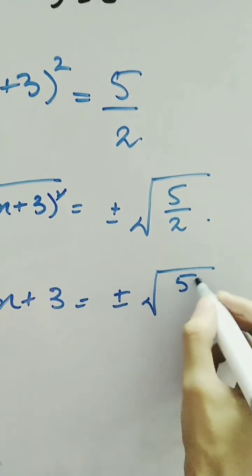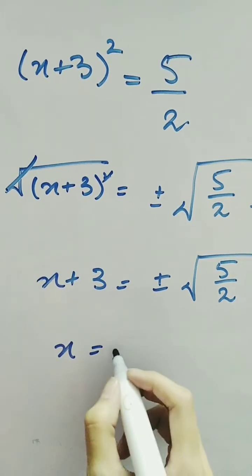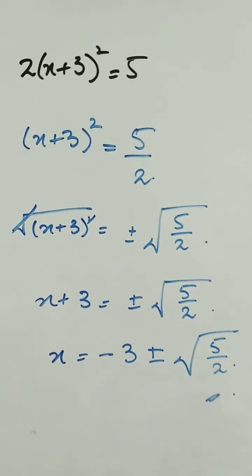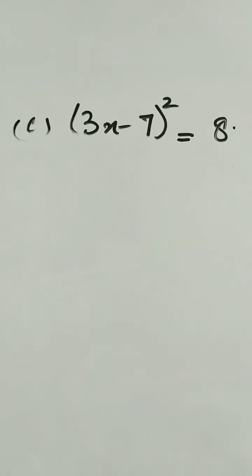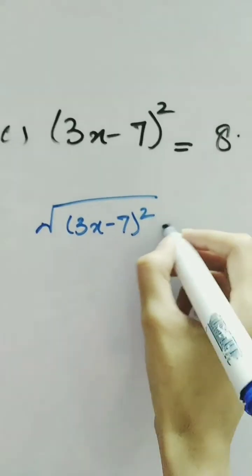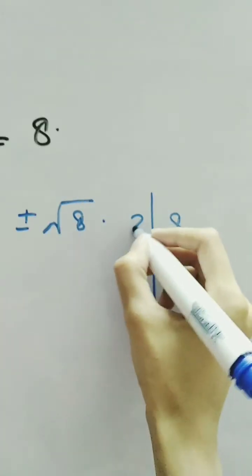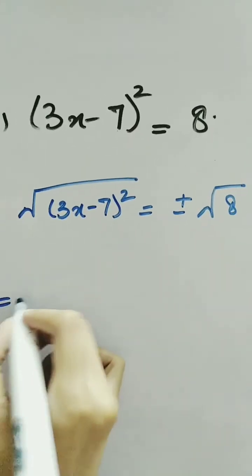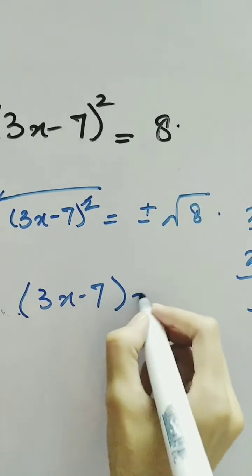Here we have another question: 2(x + 3)² = 5. We take the 2 to the right-hand side — it is multiplying the expression, so it divides into the denominator: (x + 3)² = 5/2. Taking the root of both sides, x + 3 = ±√(5/2). Taking 3 to the right-hand side to find x, we have x = -3 ± √(5/2). This is our answer.